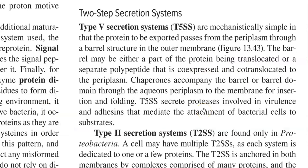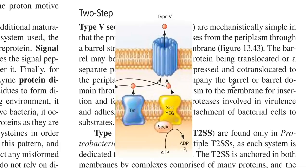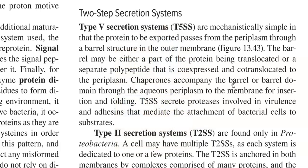Among these different secretion systems, the Type 5 secretion systems are mechanistically simpler forms involved in the export of protein from the periplasm through a barrel structure into the outer membrane. The barrel may be either a part of the protein being translocated or a separate polypeptide that is co-expressed and co-translocated to the periplasmic region. Chaperone proteins associated with the barrel domain help in folding. Proteins secreted by T5 include proteases involved in virulence and adhesion, mediating attachment of the bacterial cell to substrates.